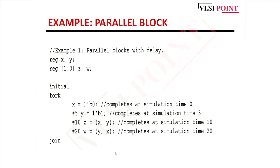In a fork/join block, statements execute concurrently and delays are treated relative to the simulation time when entering the block — they are not added cumulatively. So the first statement executes at 0 time units, the second at 5, the third at 10, and the fourth at 20 time units.